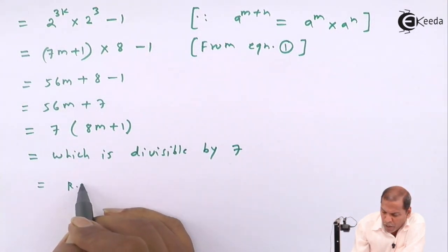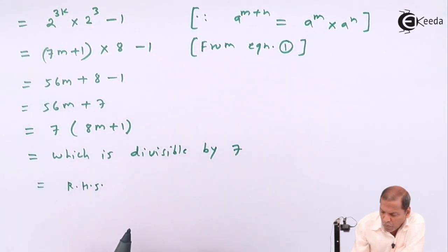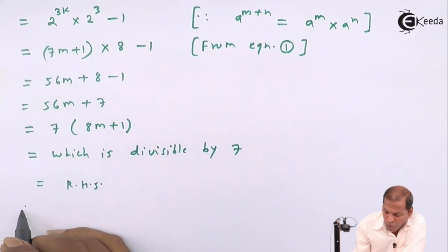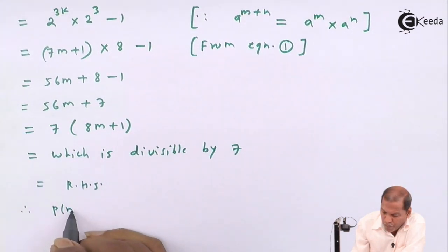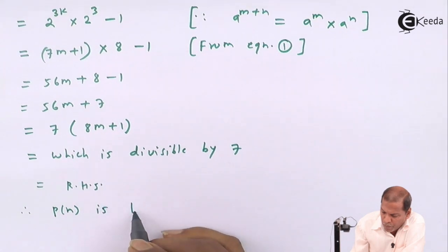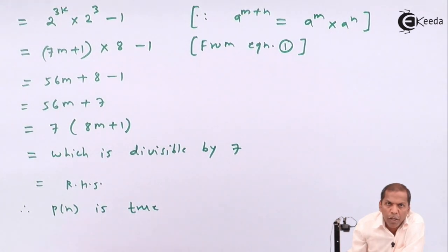And that is equal to right hand side. And therefore P(n) is true for n equal to k plus 1.